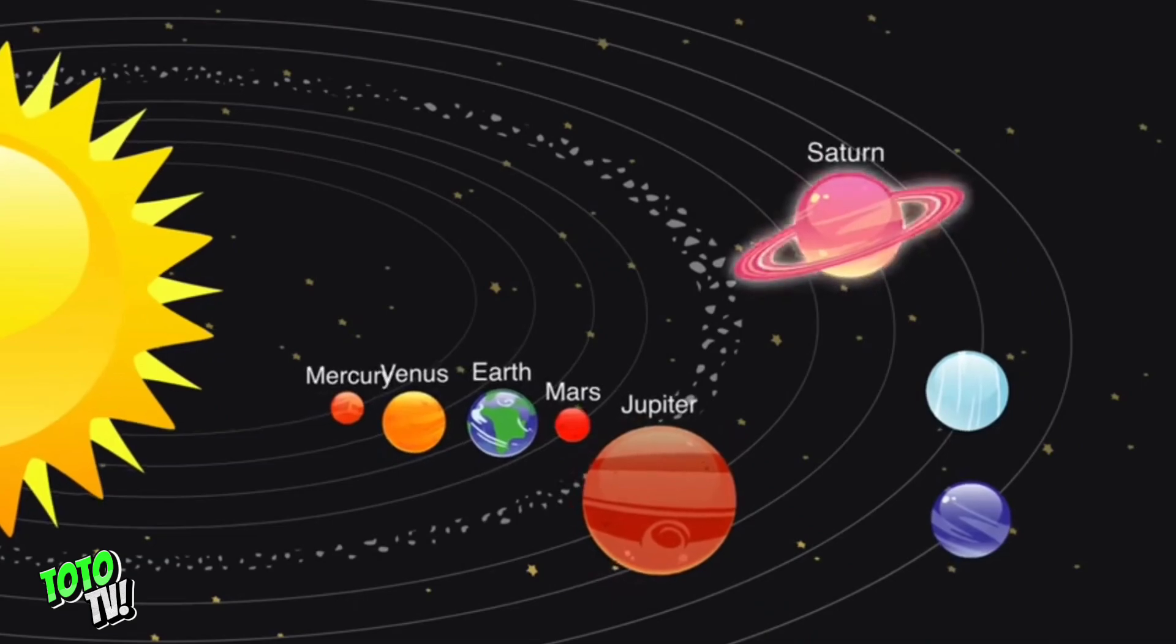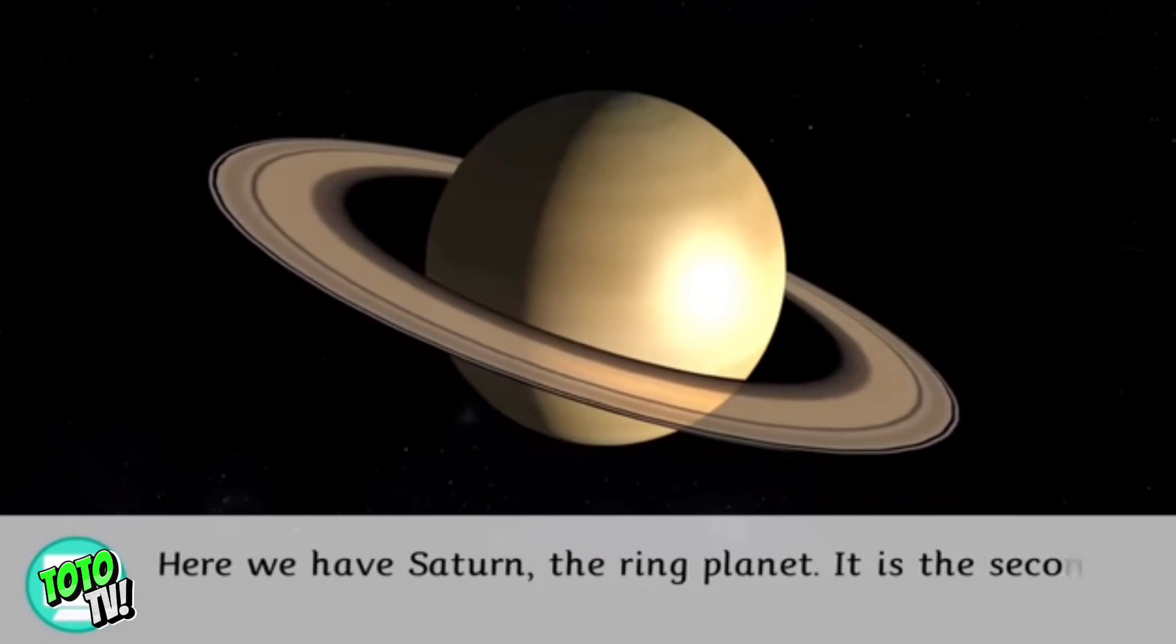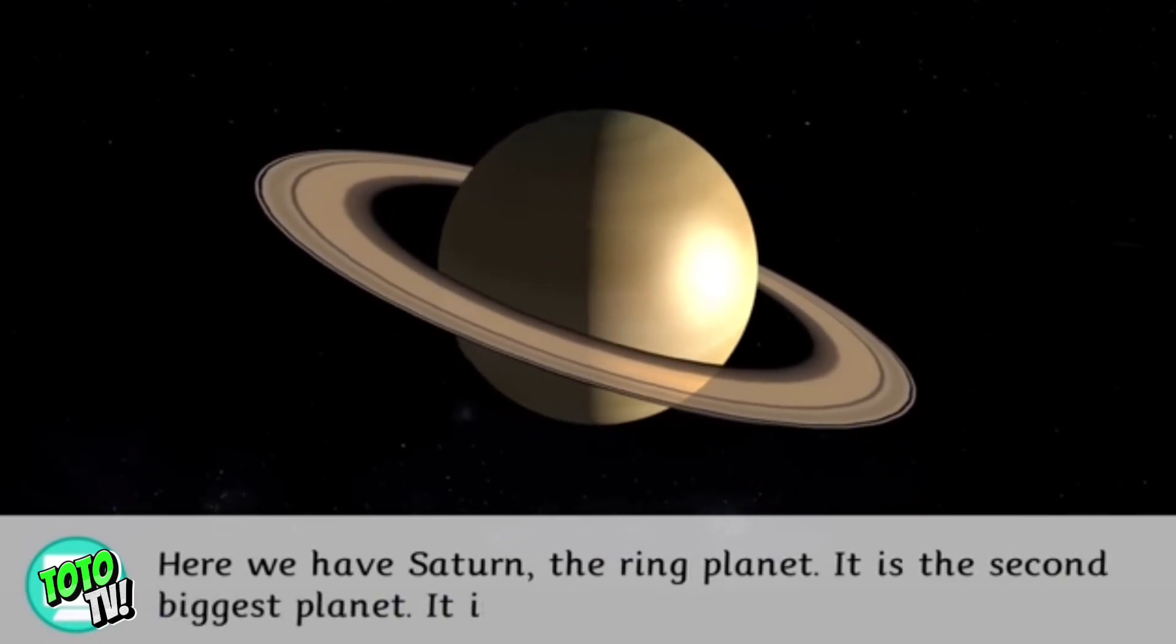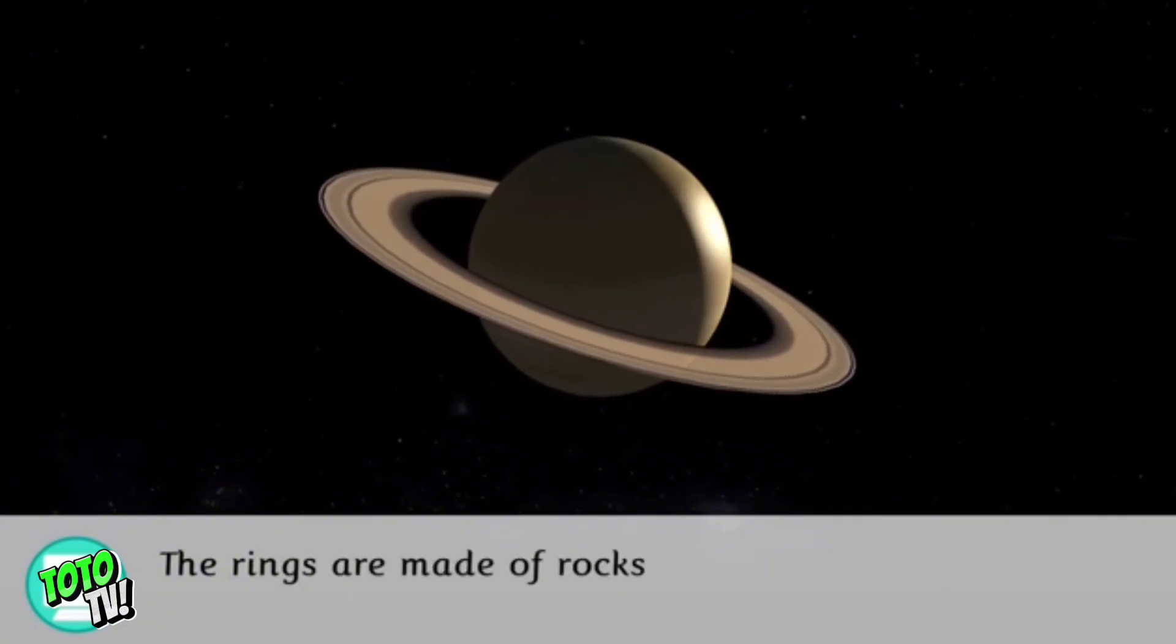Here we have Saturn, the ring planet. It is the second biggest planet. It is another one of the gaseous planets. The rings are made up of rocks and asteroids.